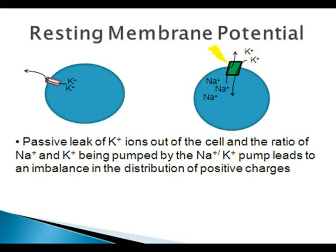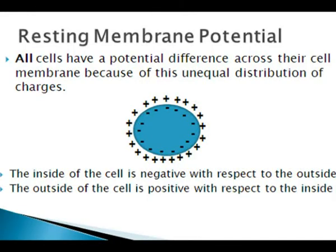With the passive leak of positively charged potassium ions out of the cell, and because the sodium-potassium ATPase pump pumps more positive ions out of the cell than into the cell, this leads to an imbalance in the distribution of positive charges. All cells of the body have a potential difference across their cell membrane because of this uneven distribution of charges. The inside of the cell is negative with respect to the outside, and the outside is relatively positive compared to the inside.